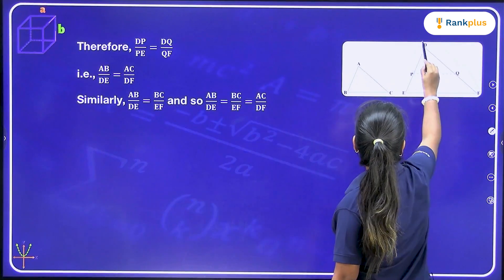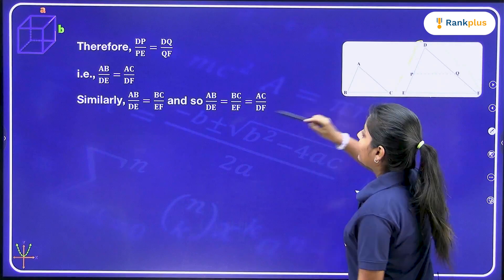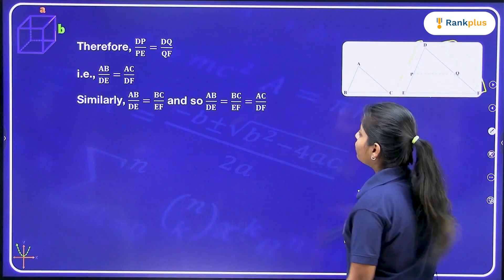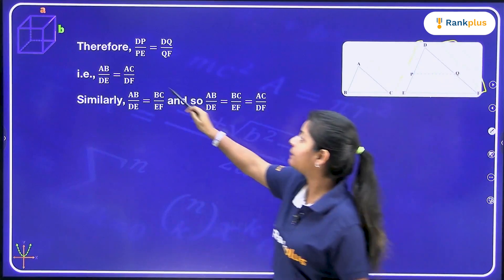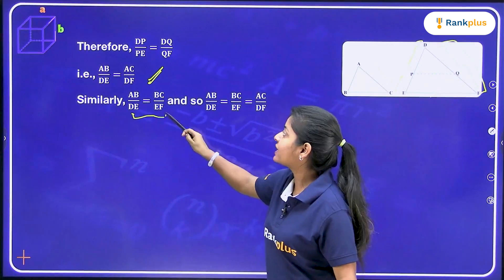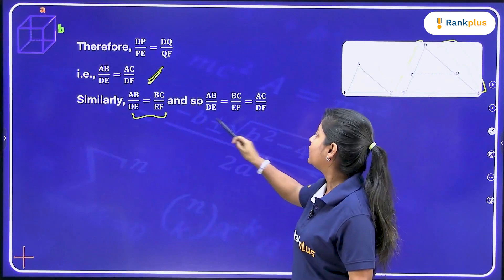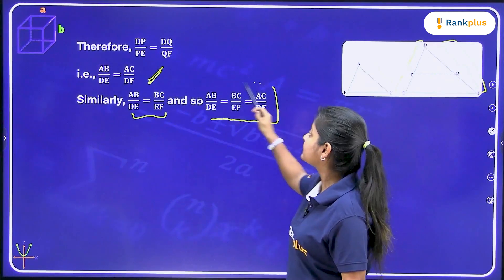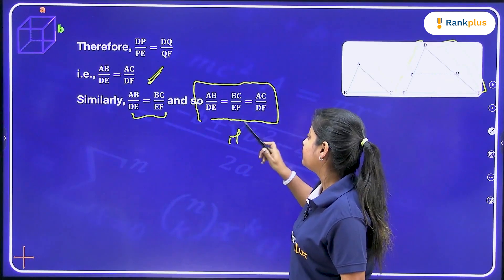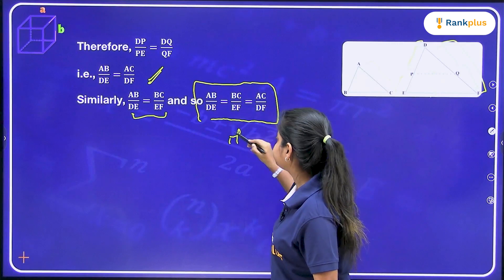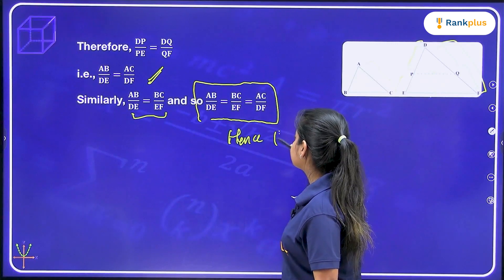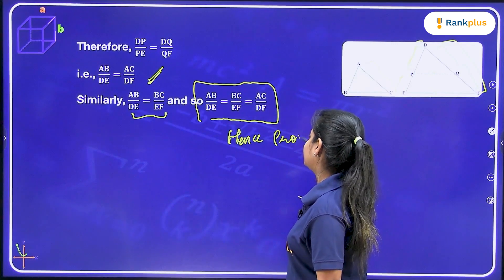DP is equal to AC upon DPF. Similarly, you can say that the ratio is equal — hence proved.